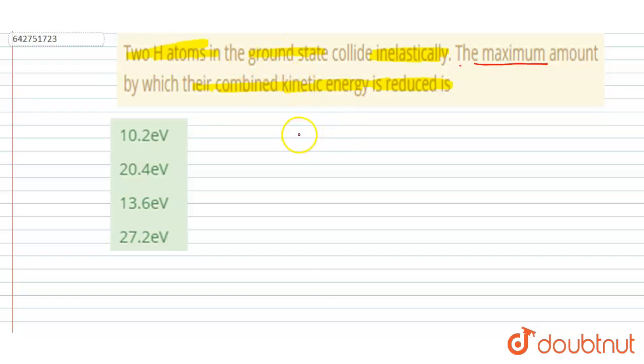If you see, initially the H atom was in ground state. So for ground state we can write the energy equals 13.6 electron volts. And there are two hydrogen atoms, so total energy I will write 13.6 into 2, and it will be equals to 27.2 electron volts. Very simple.